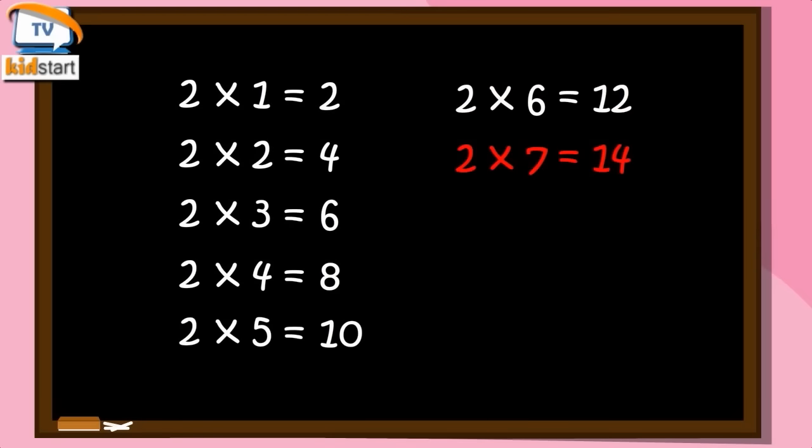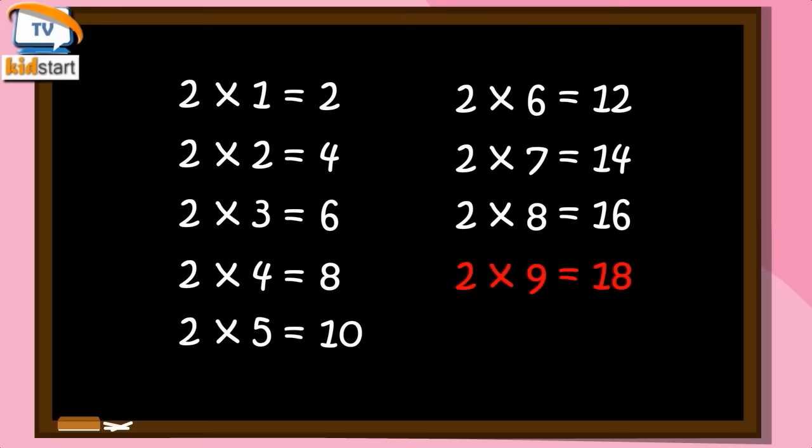Two sevens are fourteen. Two eights are sixteen. Two nines are eighteen. Two tens are twenty.